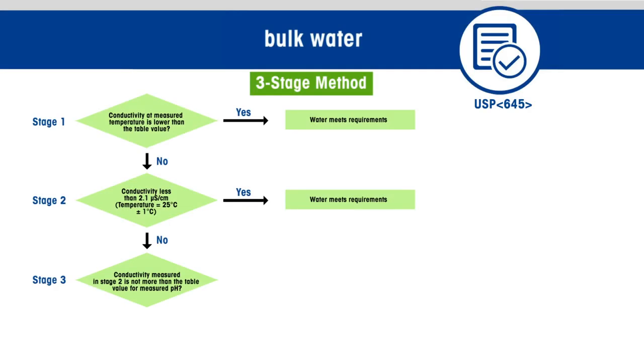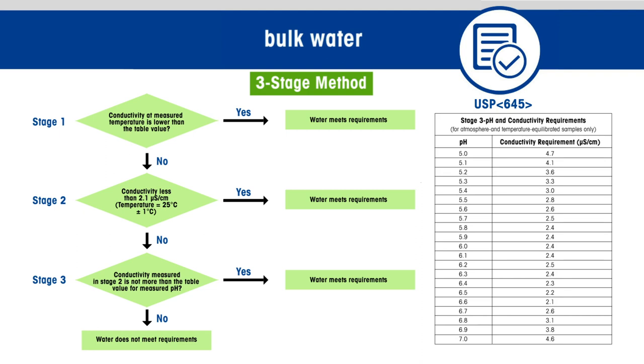In stage three, a small amount of KCl is added to the sample from stage two and a pH reading is taken, while maintaining the temperature at 25 degrees Celsius. If the conductivity measured in stage two is not more than the table value at the measured pH, the water meets the requirements. If not, the water does not meet the test for conductivity.